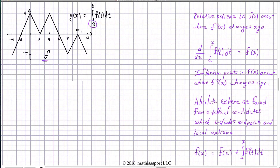With that overall insight, let's attack the questions. First, does G have a relative minimum, maximum, or neither at X equals 10? Relative extrema occur where the function's derivative changes sign. They're asking about relative extrema in G of X, which occur where G prime of X changes sign. Since G prime of X is F of X, we're asking where F of X changes sign.